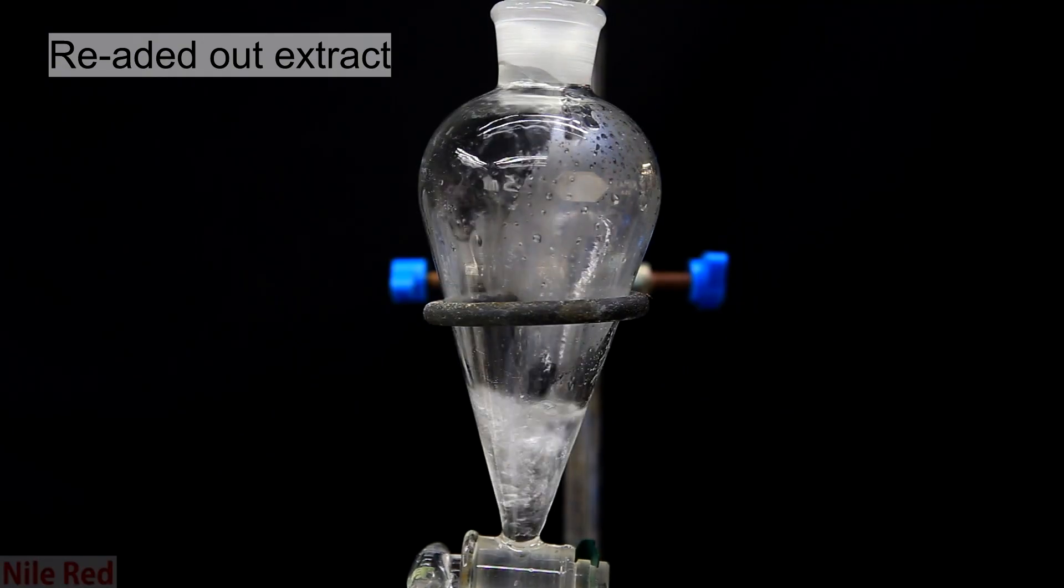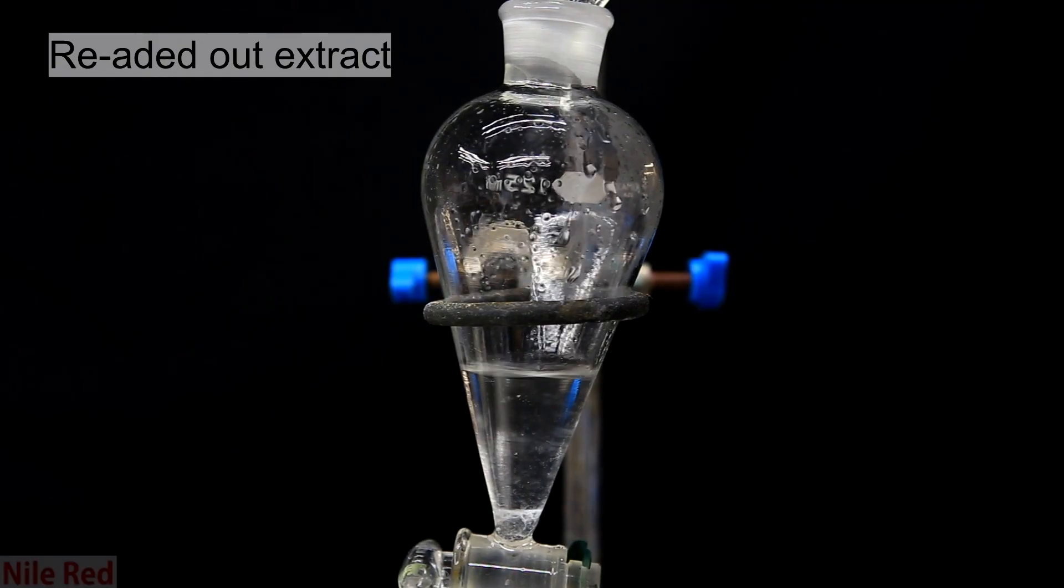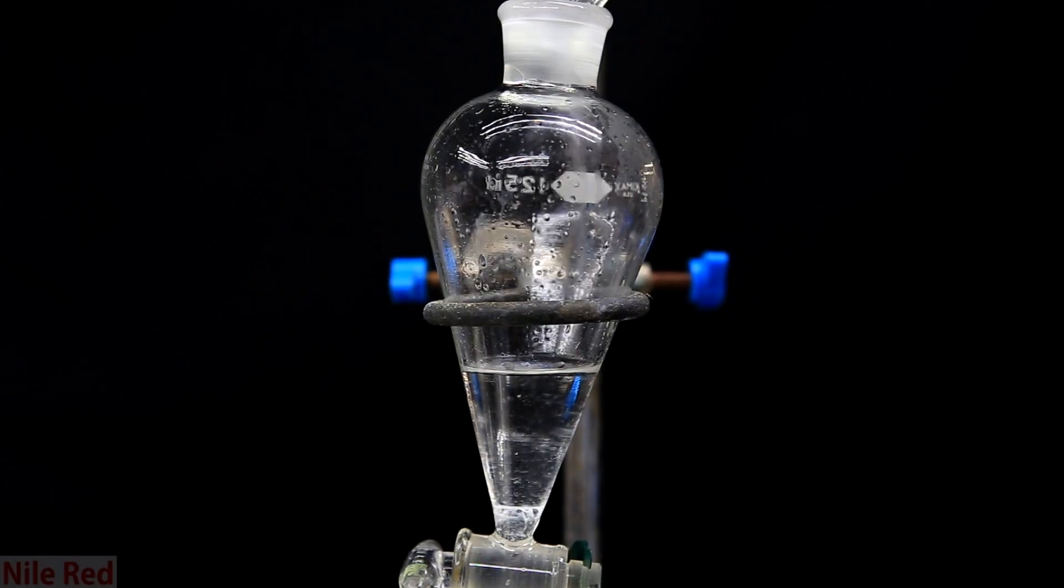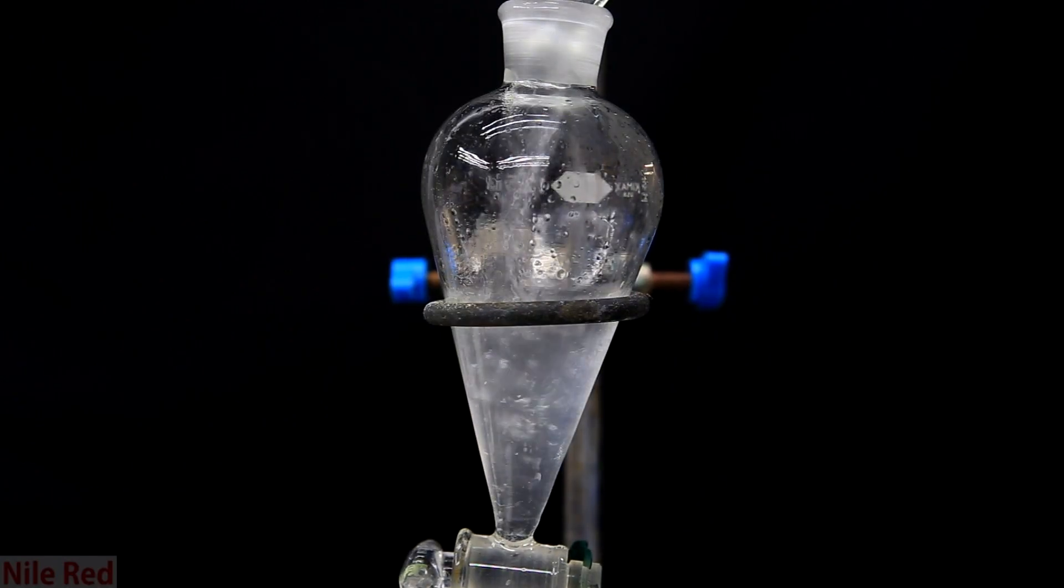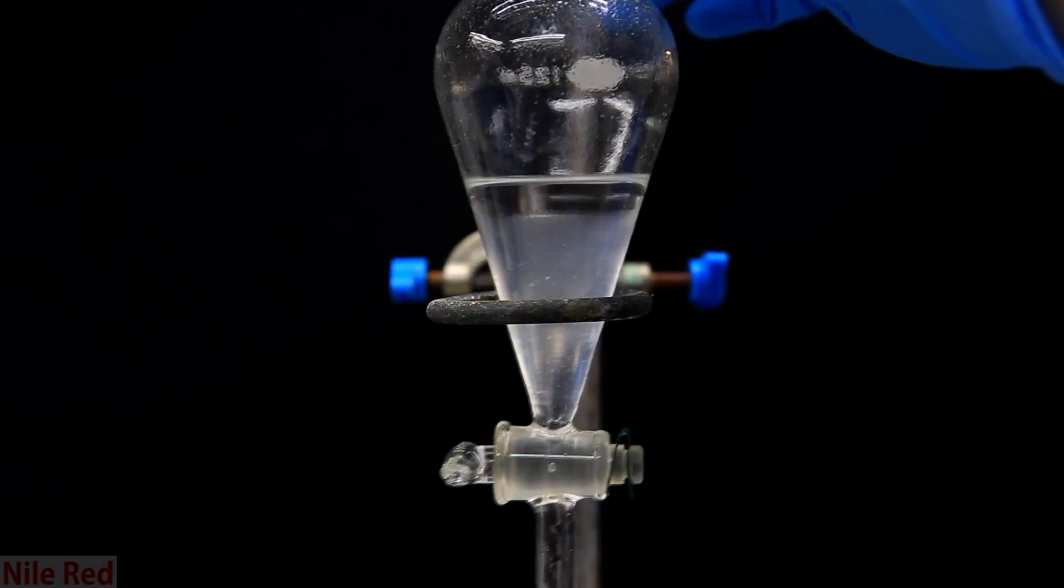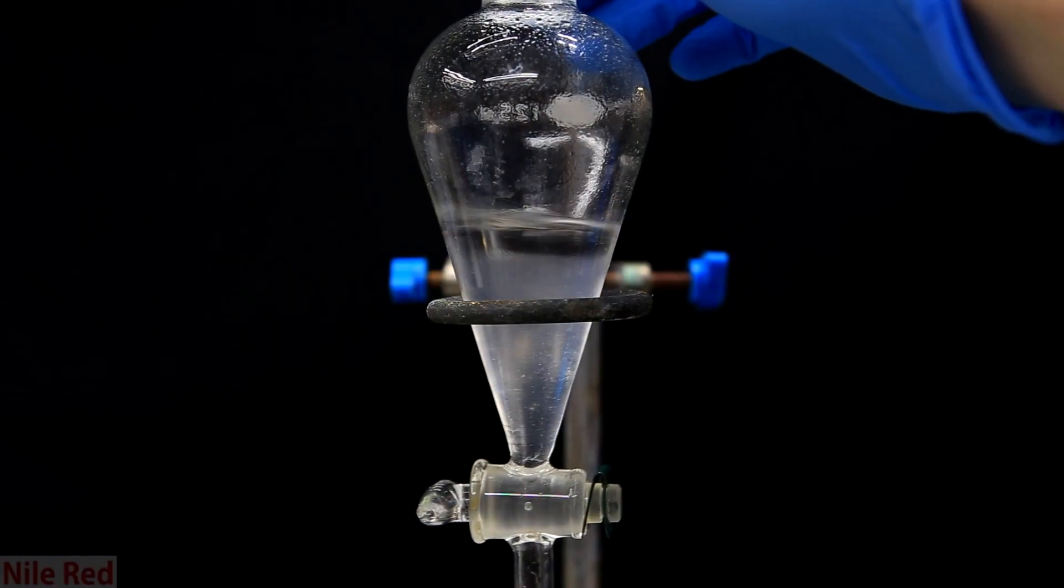A clean separatory funnel is then used and we pour in our 15 milliliters of diethyl ether. Then on top of this we pour in 25 milliliters of cold saturated salt solution. Diethyl ether actually dissolves quite a bit of water and the salt solution helps to dry it.